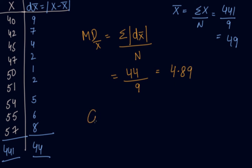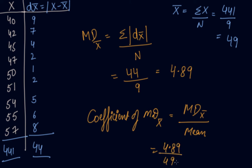Now, the coefficient of mean deviation using X-bar is mean deviation divided by the mean. So you get 4.89 - what was your mean? Your mean was 49. So you get the answer 0.10.